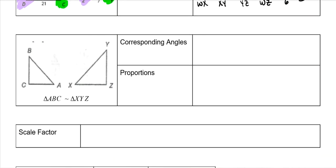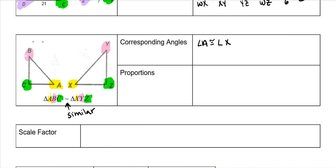This symbol here means similar — it's the symbol we use for similar — and it tells you which angles correspond. So A goes with X, and just like with congruent triangles, B goes with Y. So the corresponding angles are: angle A is congruent to angle X, angle B is congruent to angle Y, and angle C is congruent to angle Z.